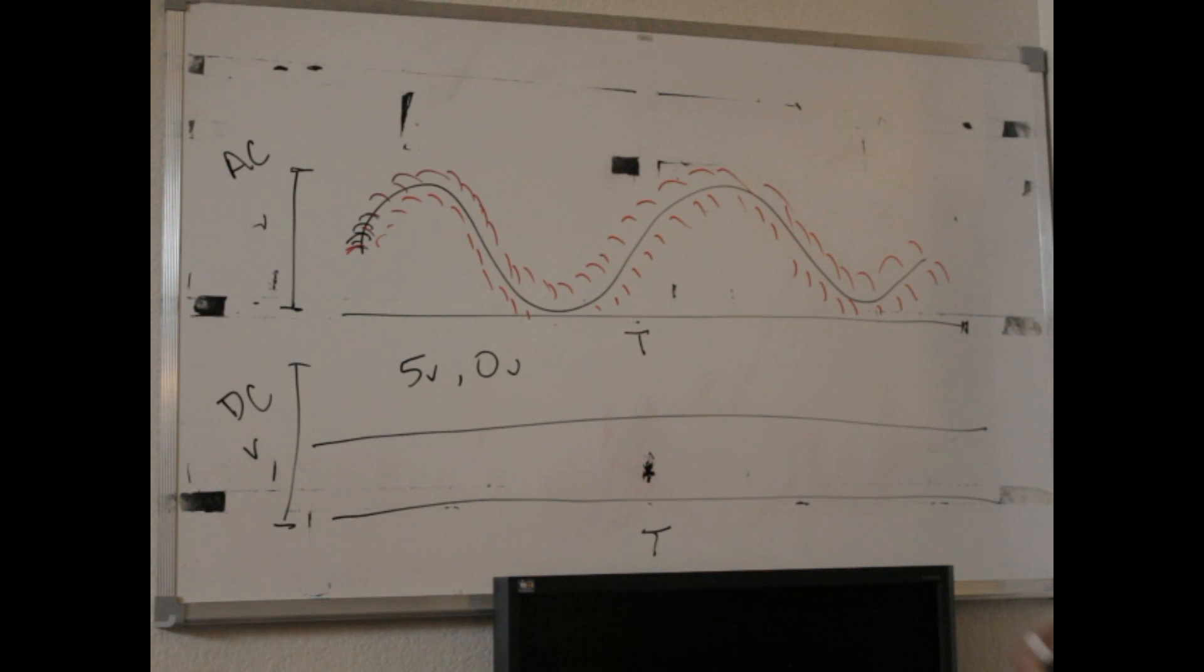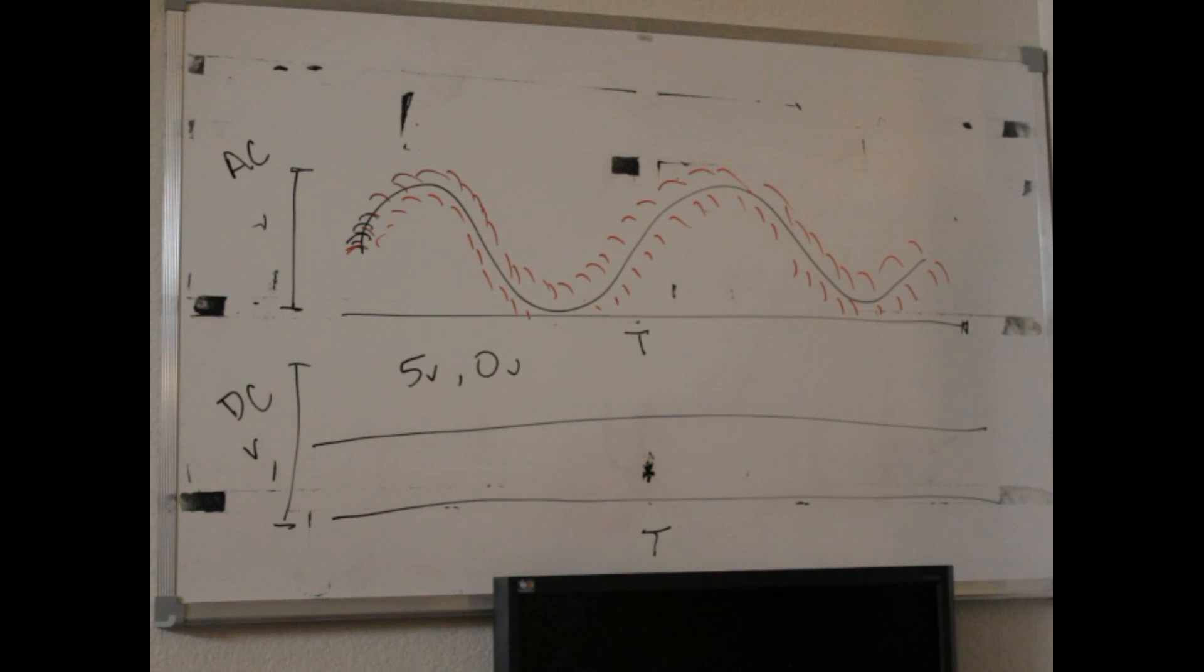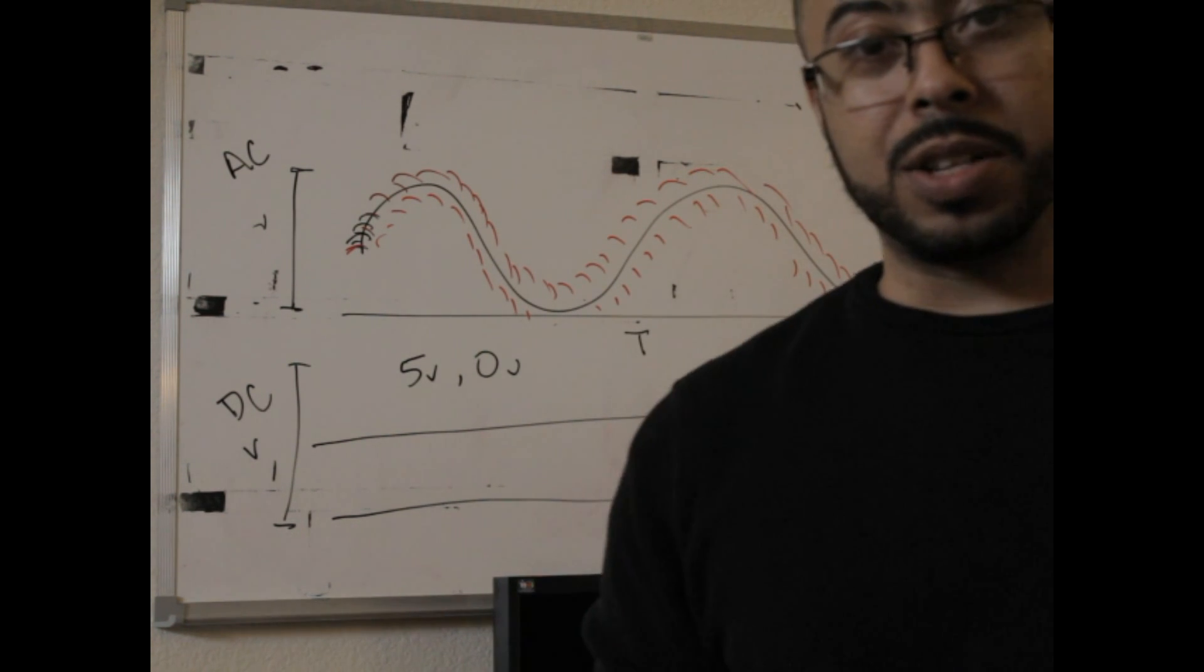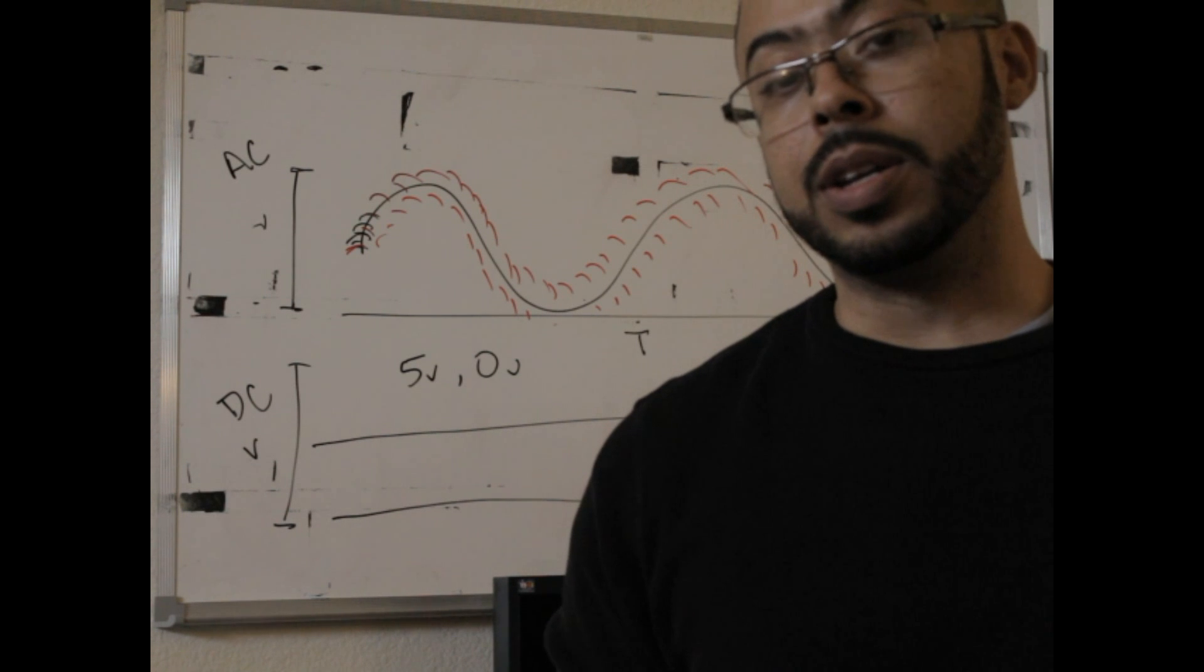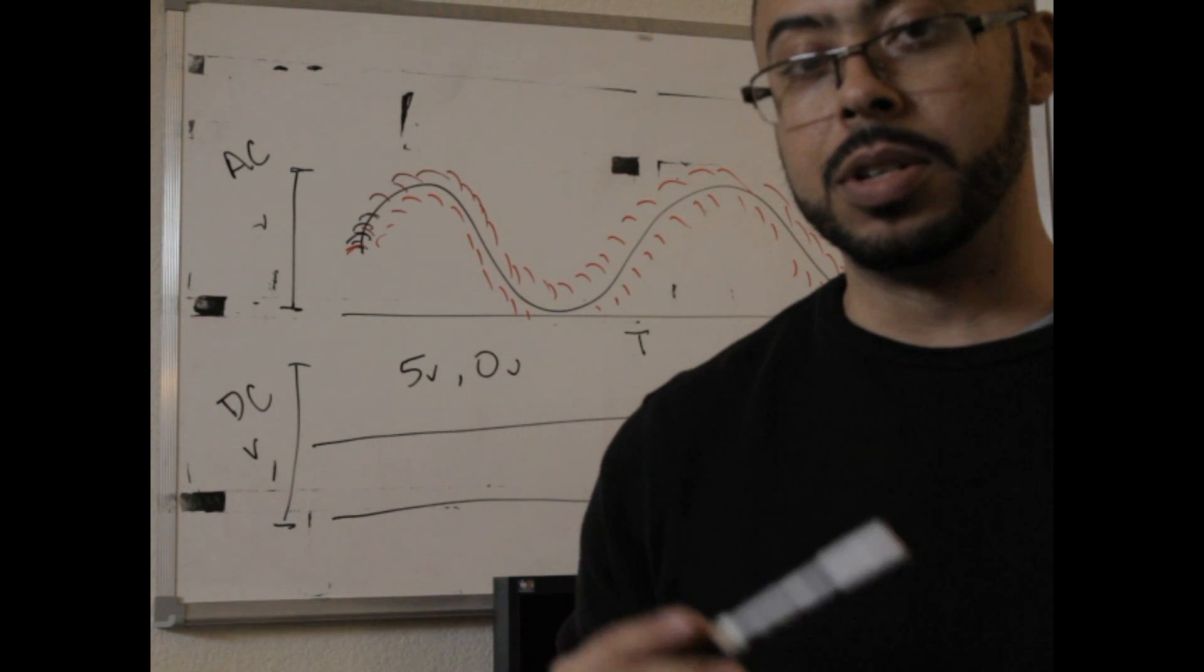So this electromagnetic property for the purposes of propagation exists here in the AC waveform. There is a lot more science behind that, but I just wanted to get into the basic differences between AC and DC.